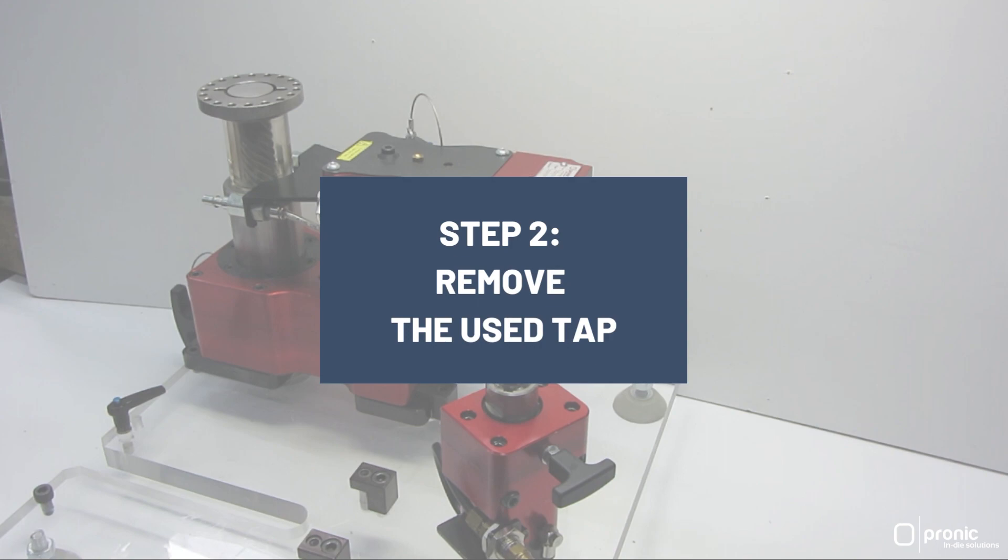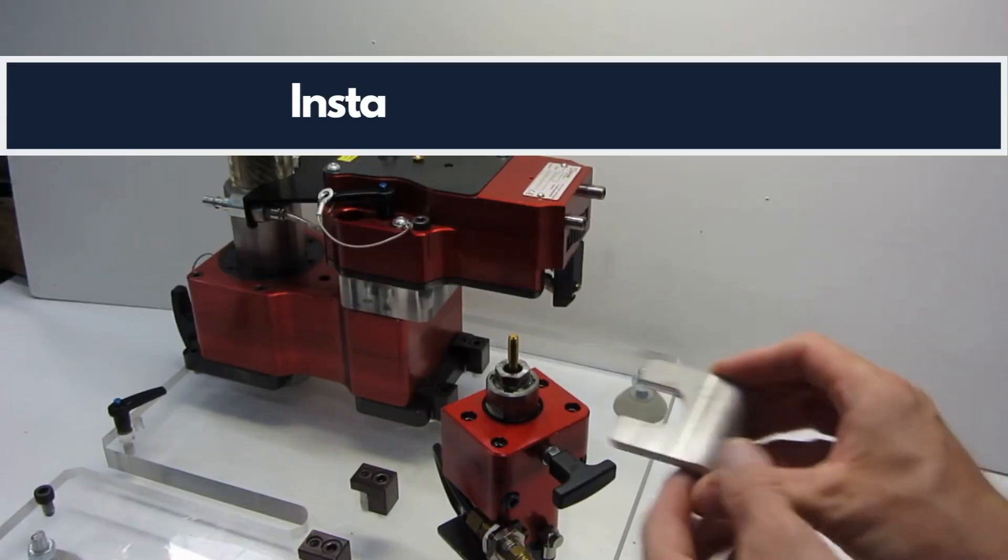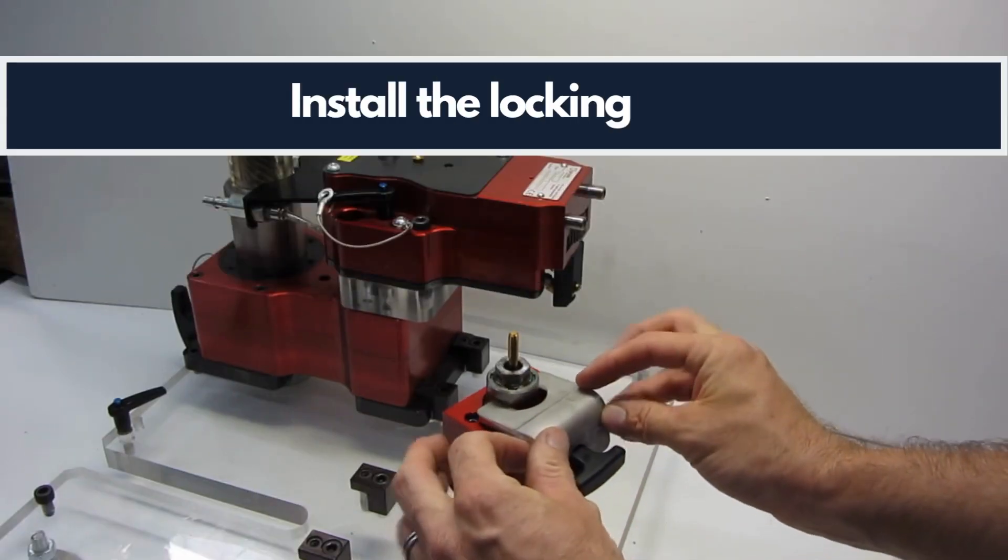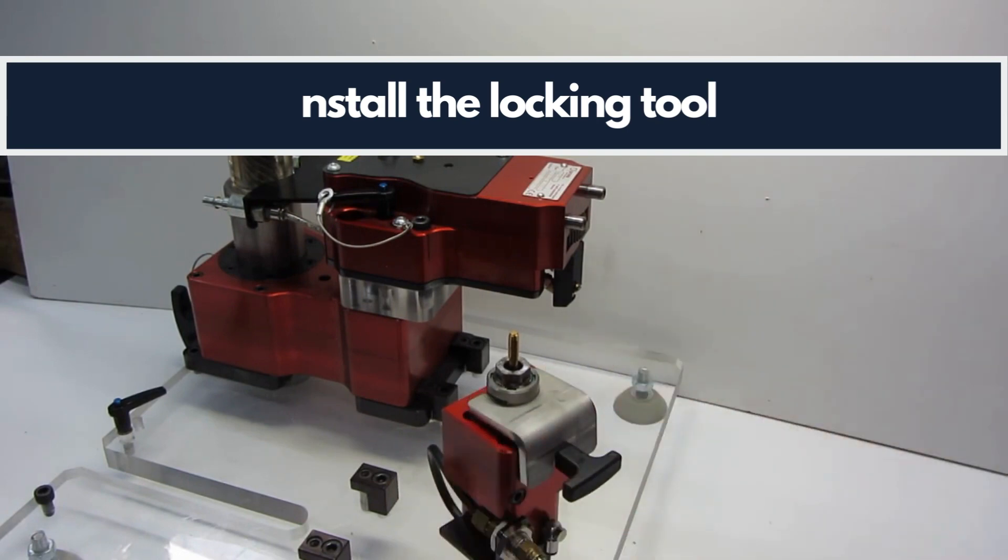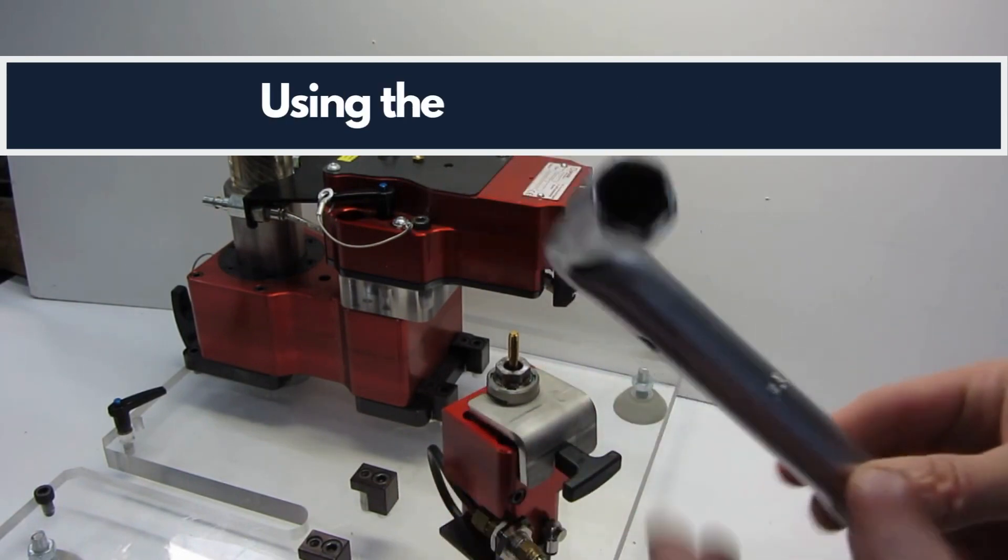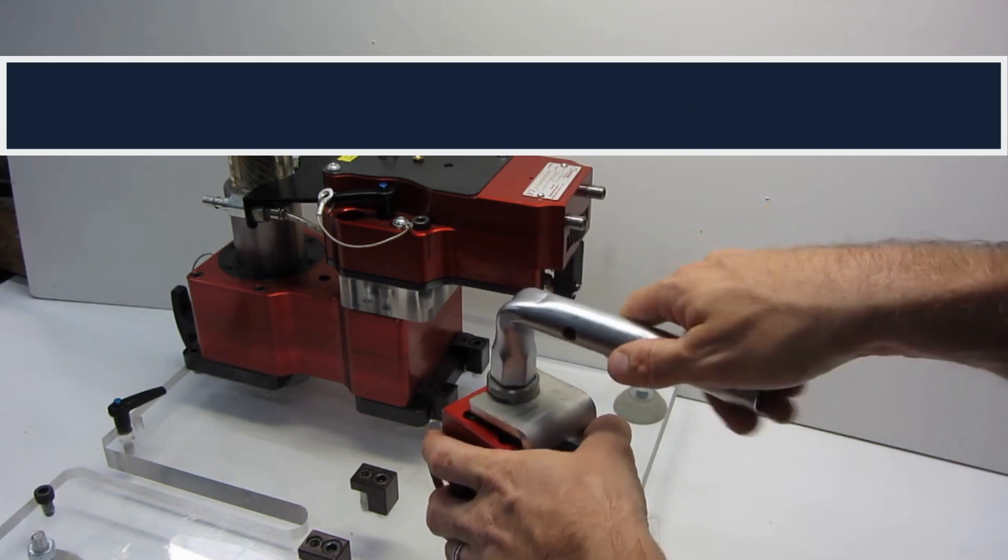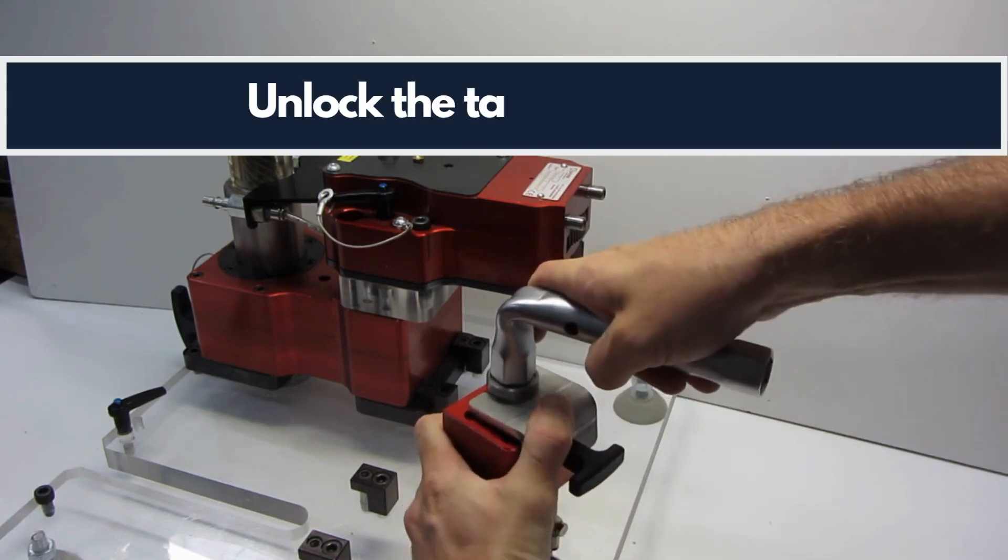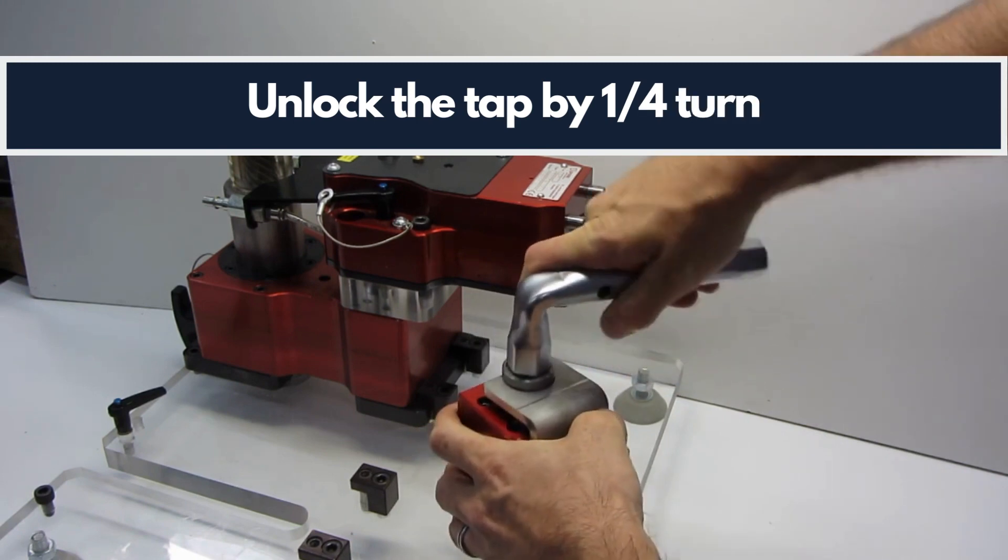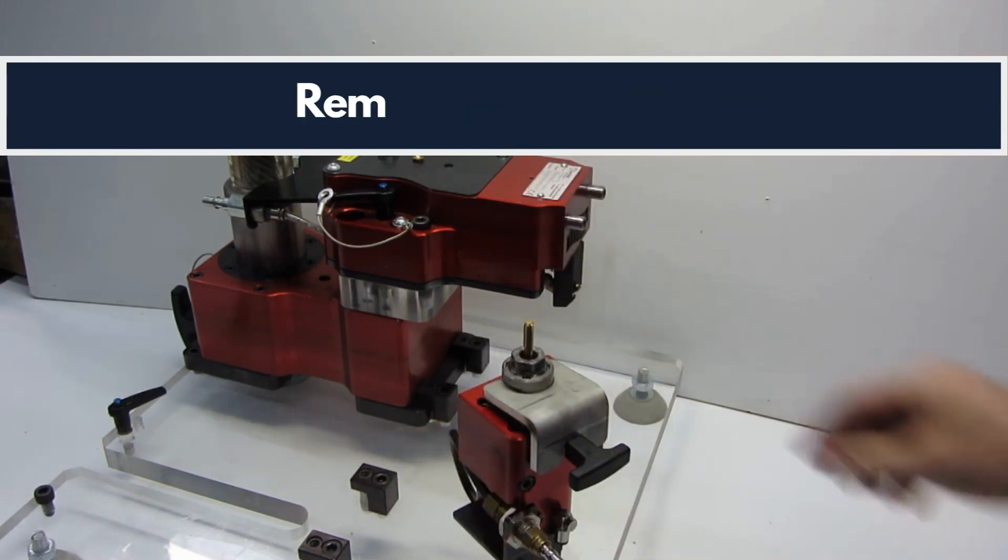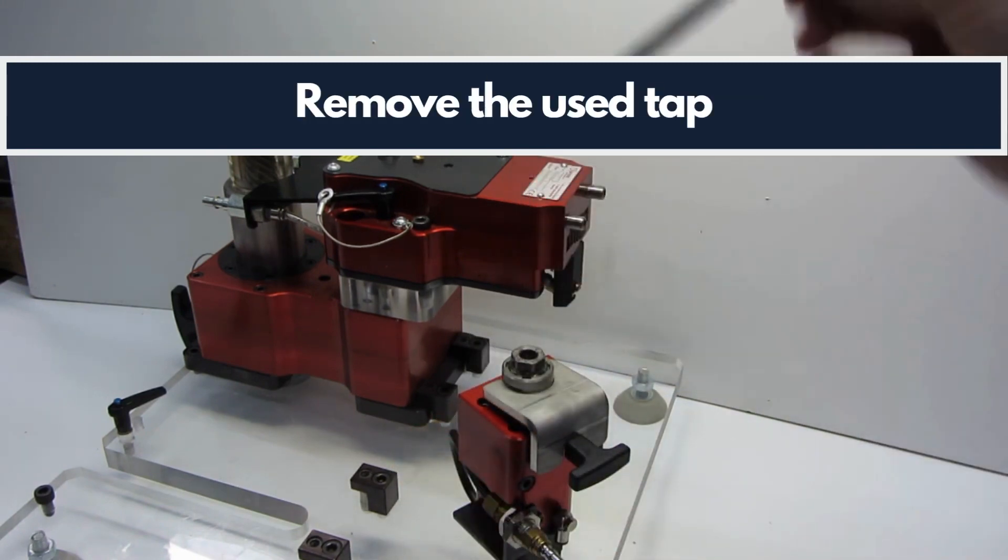Step 2: Remove the used tap. Install the locking tool on the head, then unlock the tap using the 18mm wrench. One quarter turn is enough. Remove the used tap.